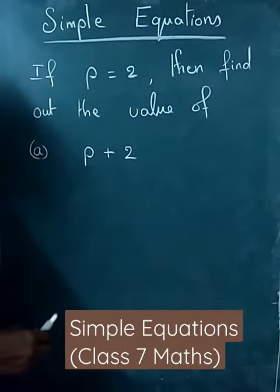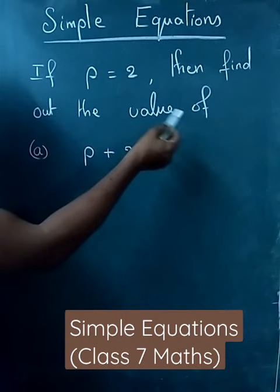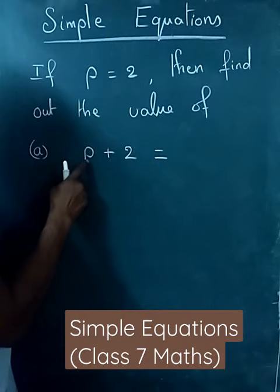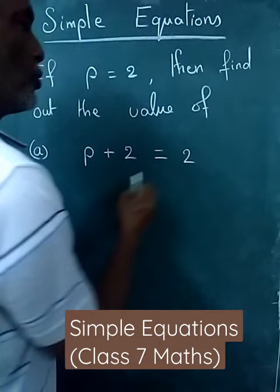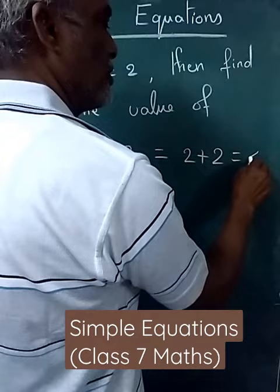Simple equations. If p is equal to 2, then find out the value of question number 1: p plus 2. First, we have to substitute the value for p. P is given as 2, so we substitute 2 plus 2, which gives us 4. We will see one more problem.